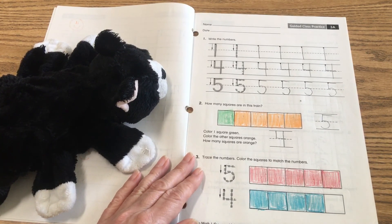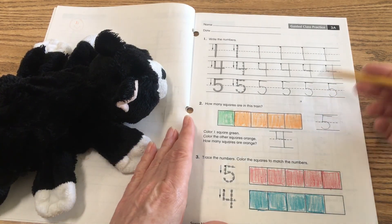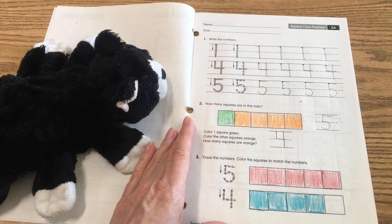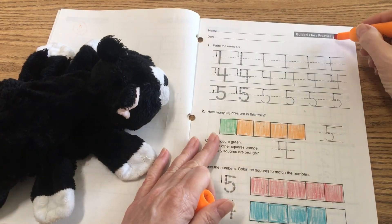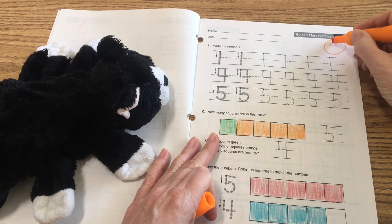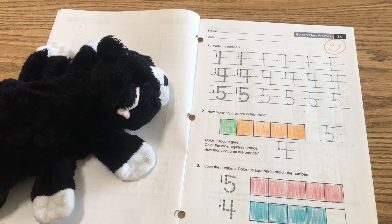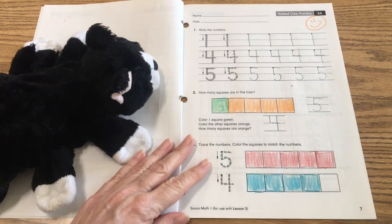So that was a good lesson. We really worked with our numbers in different ways today. Oh, I need to find my highlighter and give myself an exit ticket at the top. Great job doing your Saxon math worksheet today, boys and girls.